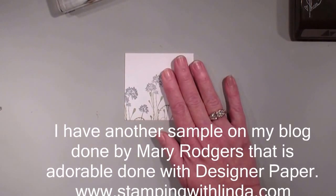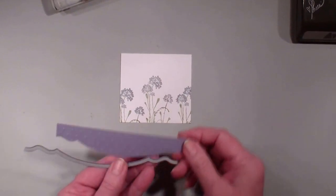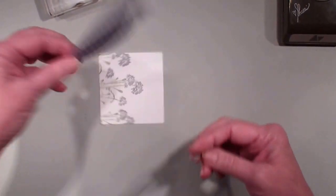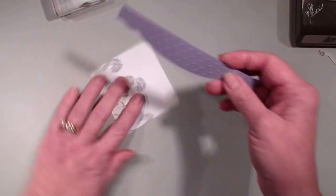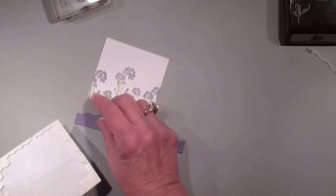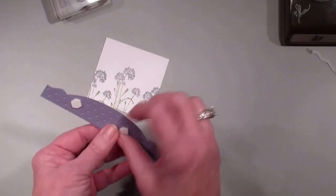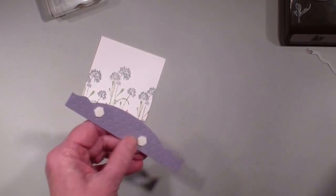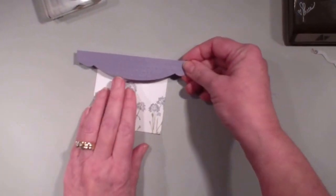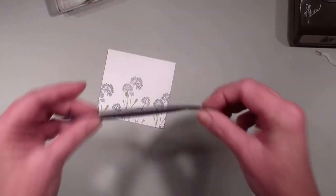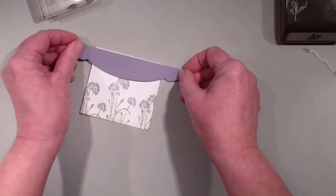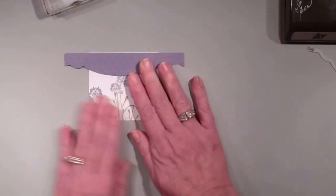Next, I want to build my valance. My valance is done with my adorning accents framelit and a small piece of wisteria wonder cardstock. I'm going to put some dimensions on that. I did make it two inches by five and a half. It is larger than my piece of paper, but I wanted it to stick out a little bit. So I just want to line that up like so.